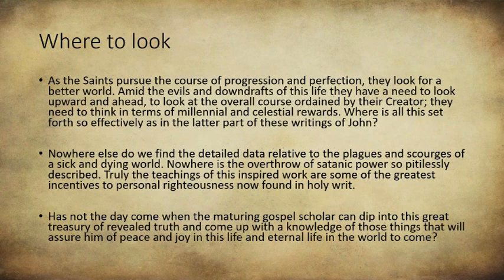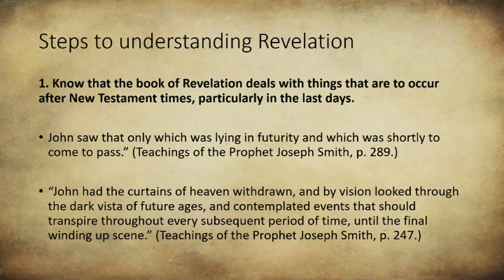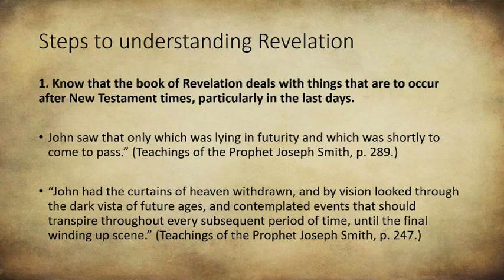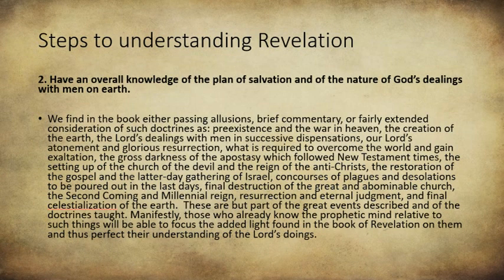McConkie then gives an approach to reading and understanding the book of Revelation from this article — some very specific steps. Number one: know that the book of Revelation deals with things that are to occur after New Testament times, particularly in the last days. John saw only that which was lying in futurity and which was shortly to come to pass. Joseph Smith said, 'John had the curtains of heaven withdrawn and by vision looked through the dark vistas of future ages and contemplated events that should transpire throughout every subsequent period of time until the final winding up scene.' Number two: have an overall knowledge of the plan of salvation and the nature of God's dealings with men on earth — he's saying this like it's a prerequisite, a requirement to better understand it.